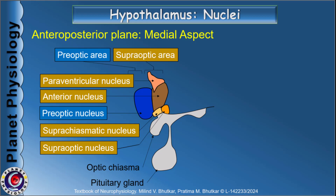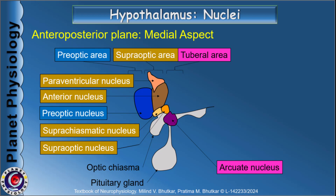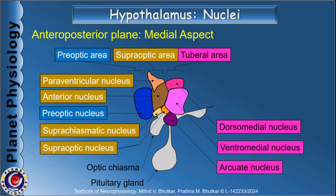The next region is the tuberal area or middle group. Important nuclei in this region are the arcuate nucleus, ventromedial nucleus, and dorsomedial nucleus. The arcuate nucleus forms an arc around the median eminence, hence the name. Both ventromedial and dorsomedial nuclei are present on the medial side — the one which is anterior is called ventromedial and the other is posteromedial. The tuberal area also includes the lateral nucleus, which, being lateral in position, is not visible in this medial aspect view.